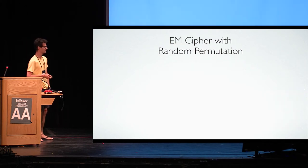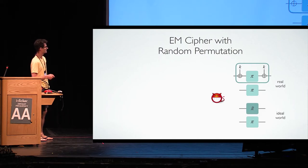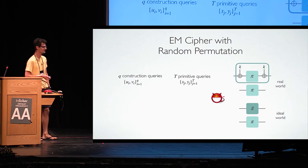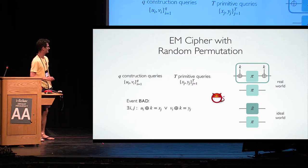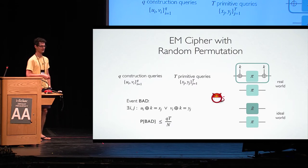Here is another example: the Even-Mansour cipher. The attacker tries to distinguish real from ideal. In the real world, he can make forward or backward queries to the Even-Mansour construction and to the underlying primitive. In the ideal world, instead of the construction, there is an independent uniform random permutation. There is a bad event that roughly says if the attacker makes a primitive query corresponding to a construction query he made, then we give up. By a simple union bound, you can derive the bound: number of construction queries times number of primitive queries divided by n.